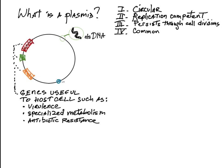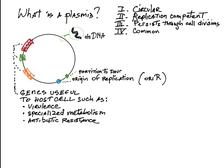All plasmids carry an origin of replication, ORI-R, a genetic locus from which DNA replication starts. Often, close to ORI-R is a locus that ensures efficient partition of the replicated plasmid between daughter cells.